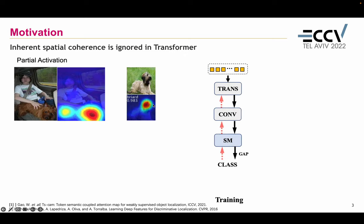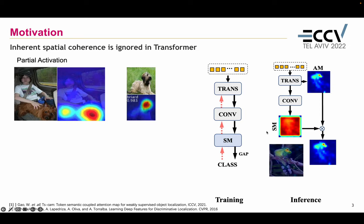To address this challenge, typical recent work replaced traditional CNNs with Transformers to take full advantage of their long-range dependencies. Their training pipeline typically encodes the Transformer features through a convolution layer into a semantic activation map, which is updated through the gradient from the class labels via back propagation. During inference, they couple the semantic map and the attention map from the Transformer to obtain the final prediction.